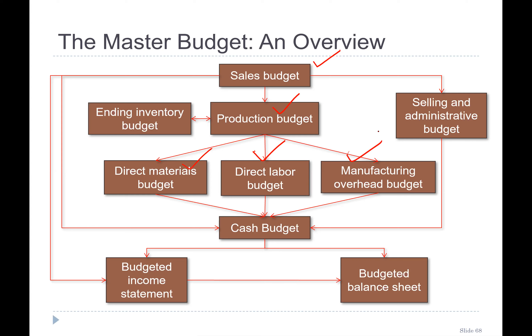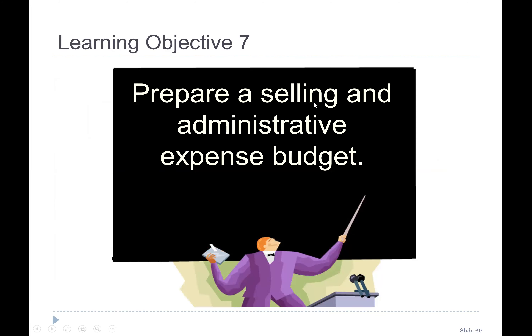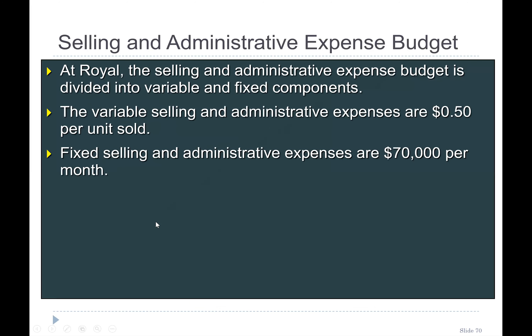After that we finished ending inventory budgeting. Today we'll talk about the selling and administrative budget, the cash budget, the budgeted income statement, and the budgeted balance sheet. Our learning objective today is to prepare a selling and administrative expense budget.